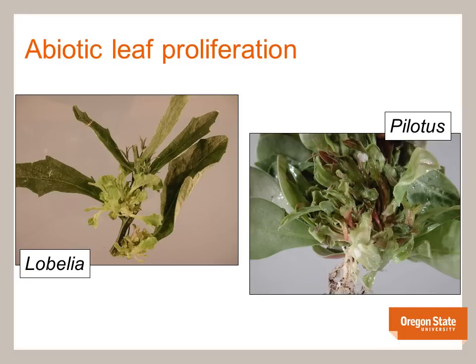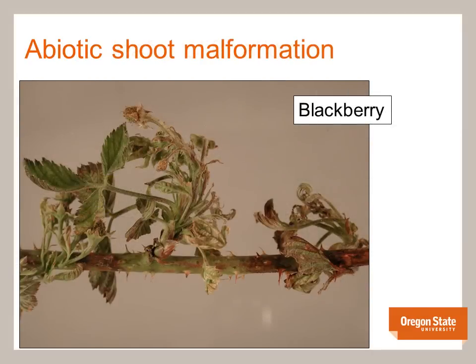Plant growth regulators are used in the ornamentals industry to produce bushy compact plants with good colour that will not outgrow their pots prior to sale. These products are synthetic or natural plant hormones that shorten plant stature, increase lateral branching, increase cell division, and reduce senescence. These effects are very similar to those produced by bacterial cytokinins originating from Rhodococcus fascians. These stunted malformed shoots were due to herbicide injury but can easily be confused with malformations induced by Rhodococcus fascians.